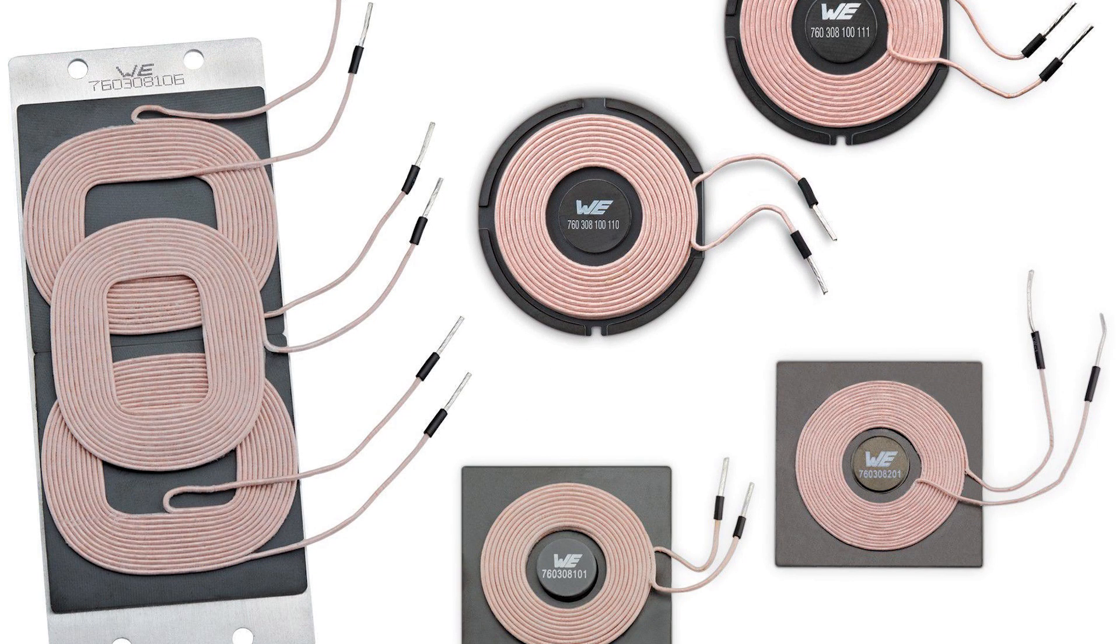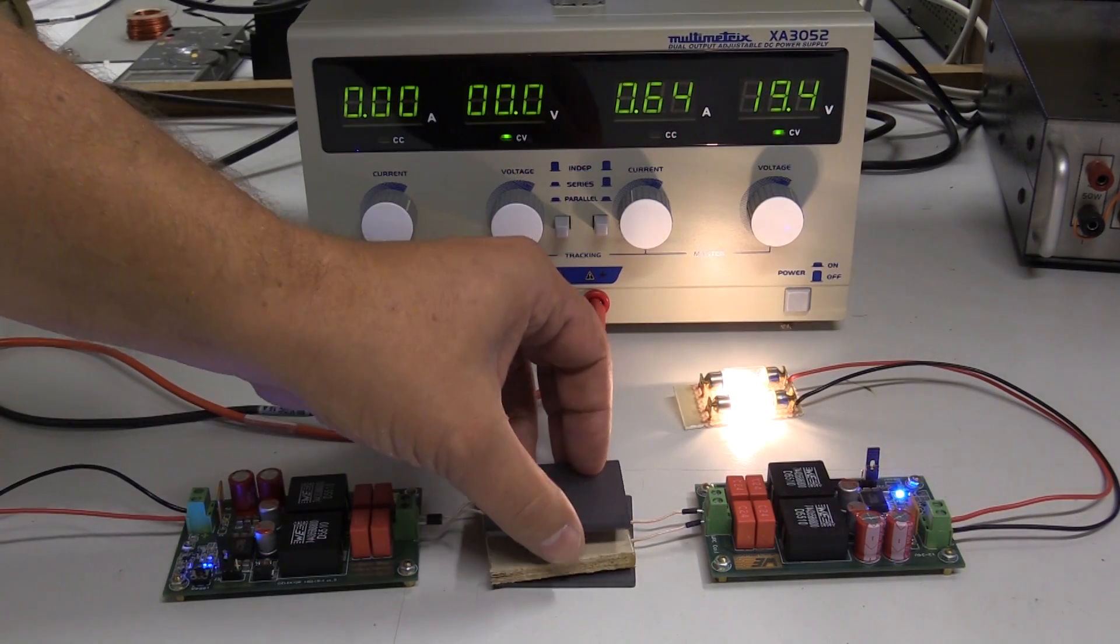Two identical coils placed on a small distance from each other transfer energy from one coil to the other by means of an alternating magnetic field.